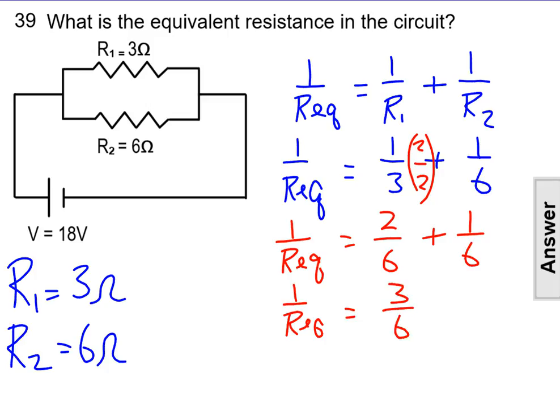The final step is to take the reciprocal of both fractions to solve for REQ. The reciprocal of 1 over REQ equals REQ over 1. And the reciprocal of 3 over 6 equals 6 over 3. Now we can just divide 6 divided by 3 to get an equivalent resistance of 2 ohms.